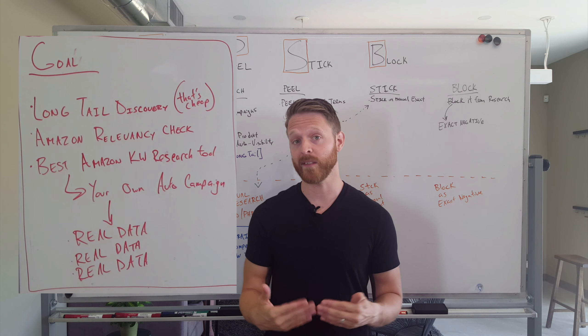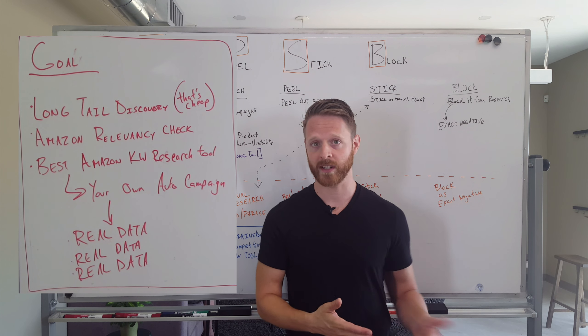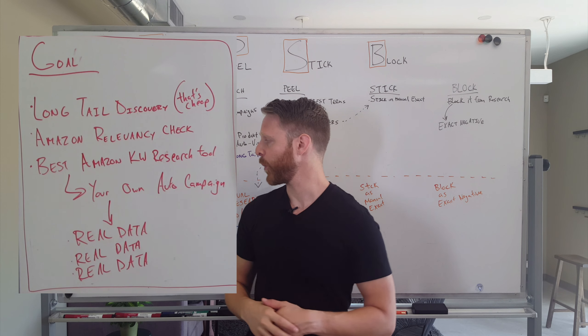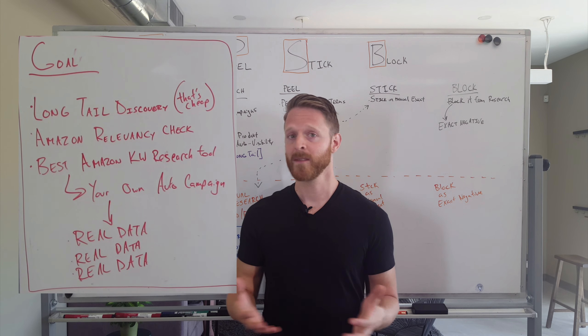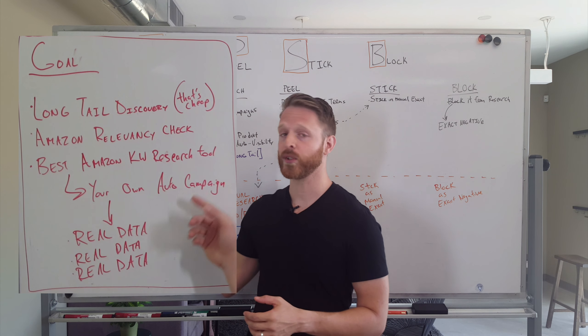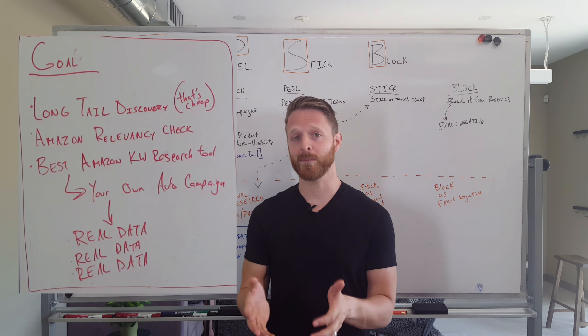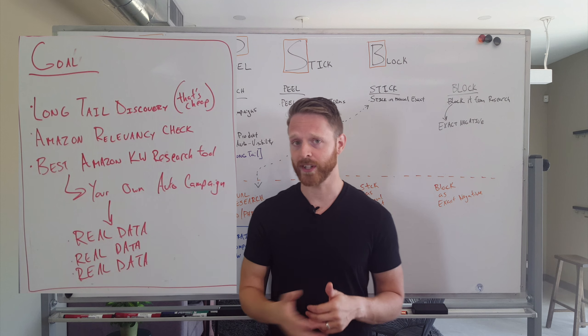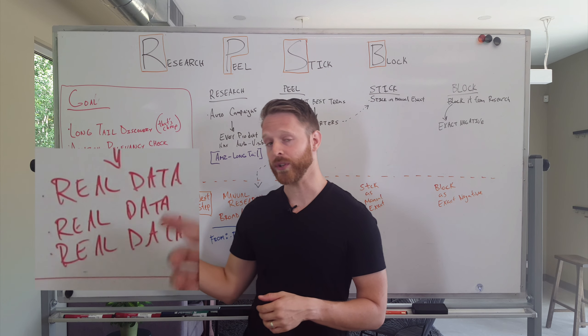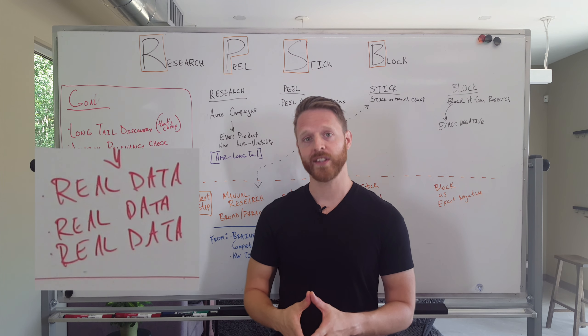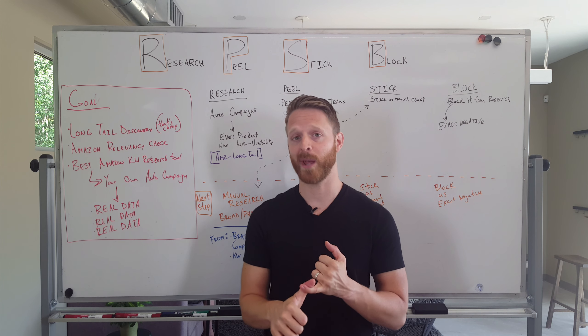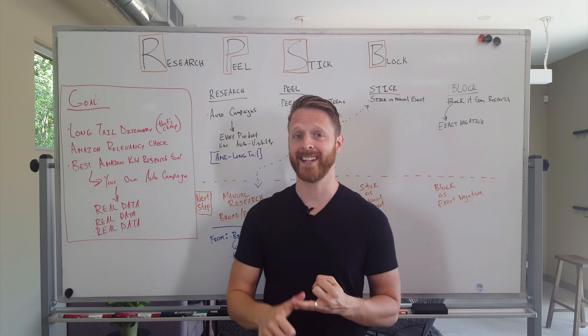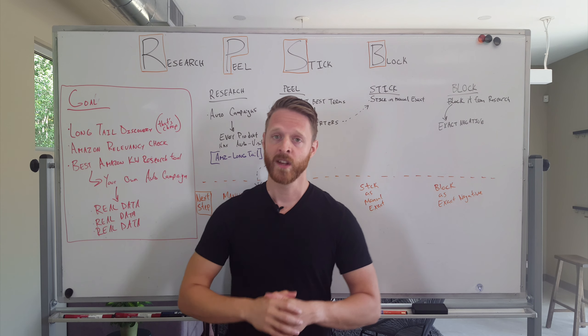The second thing we want to do is actually find the terms that Amazon actually believes is relevant for our product. And then third, we really want to tap into the very best keyword research tool, period. And the reason why this is so good, the reason why your own automatic campaigns are so good, is because you get real data. This isn't conjecture, this isn't coming from a keyword research tool - this is coming actually from Amazon with people interacting and engaging with your product.